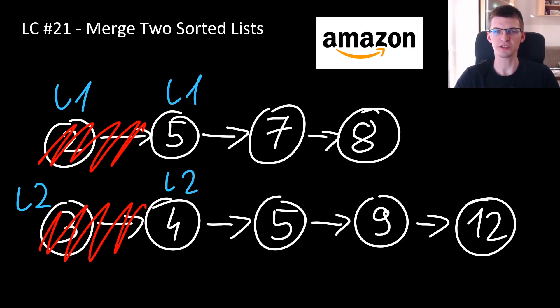In general, this is called two pointers technique and let's take a look at its more common use case, merging two arrays. This is part of the very important algorithm merge sort, which is arguably the easiest n log n sorting algorithm.